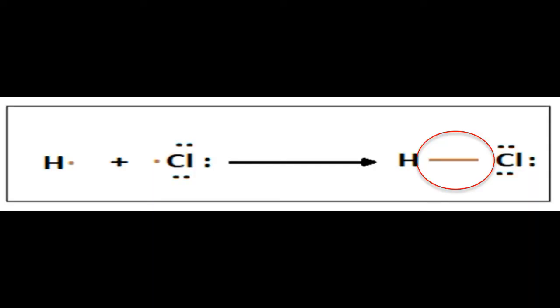For example, the hydrogen chloride molecule has one hydrogen atom with one valence electron and one chlorine atom with seven valence electrons. In this case, a single bond is formed between hydrogen and chlorine by sharing one electron.